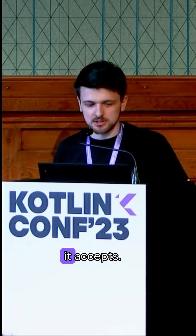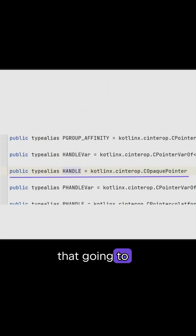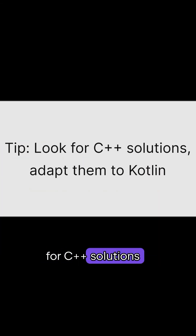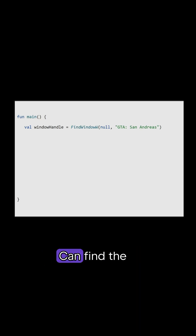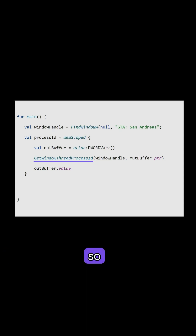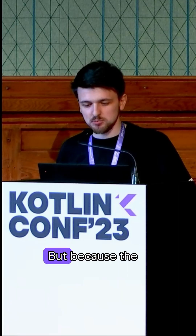Now we need to figure out which parameters it accepts. The first parameter is hProcess handle. Going to the declaration of handle won't help. We have to figure out how to get it. The best tip is to Google for C++ solutions and adapt them to Kotlin. So we first have to start with getting the window. You can find the window by the window name. The only meaningful part is calling GetWindowThreadProcessId. We can pass the window handle that we got earlier and we should get the processID that basically runs this window.